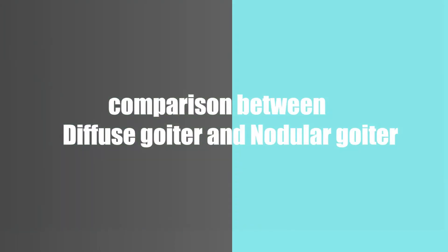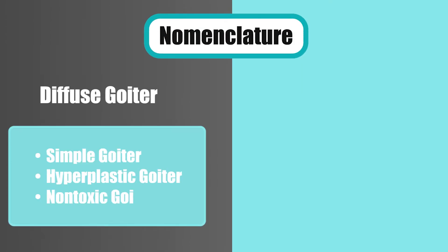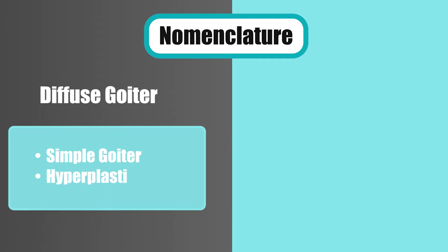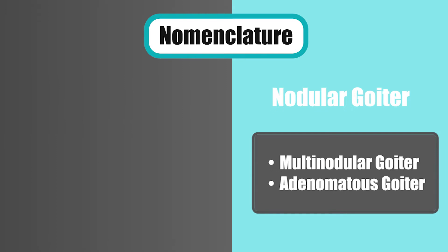Today I will make a small comparison between diffuse goiter and nodular goiter. Feature number one is nomenclature. Diffuse goiter is also called simple goiter, hyperplastic goiter, or non-toxic goiter. But nodular goiter is called multinodular goiter, and it is also called adenomatous goiter.